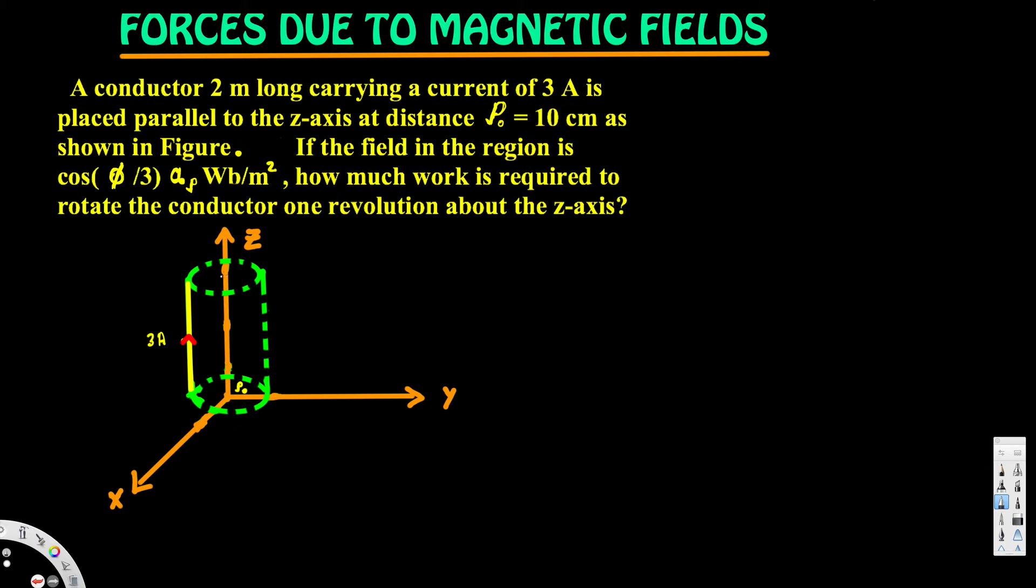In order to find the work, first we have to find the force. Now to find the force of the conductor, we can use this equation: F equals I L cross B. I is given, that is 3 amperes, so we can plug 3 right here. And the length of the conductor is 2 meters, and that is in the z direction. Because you can see this is in the z direction, so this is going to be 2az.